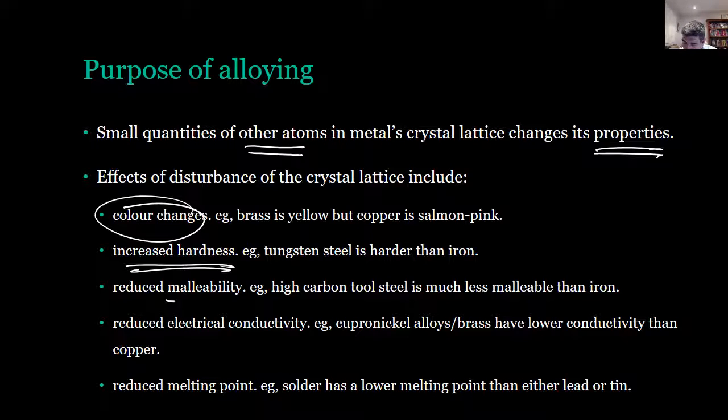Changes in malleability: high carbon tool steel is less malleable than iron, harder to shape. Changes in electrical conductivity such as some of the cupronickel alloys or brass which have lower conductivity than their parent metal, copper. And also changes in things like melting point. Solder is an example of a low melting point alloy that's been produced which is lower in melting point than either of its two main components, lead or tin.